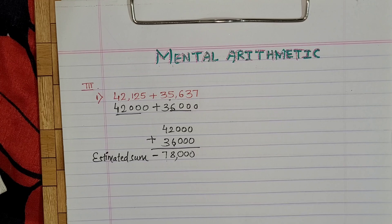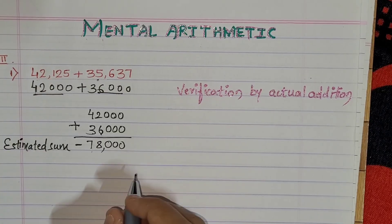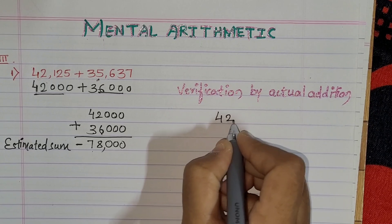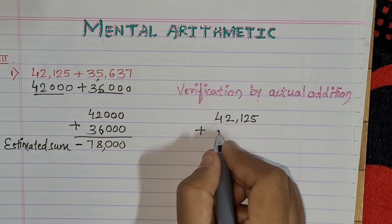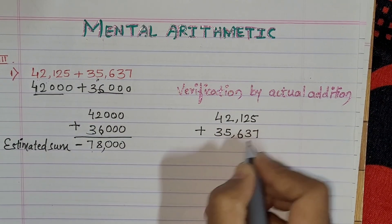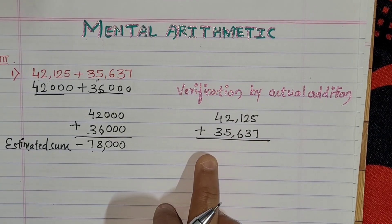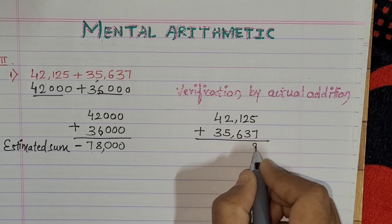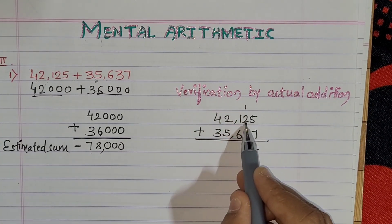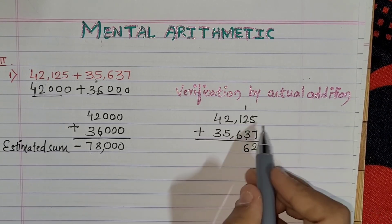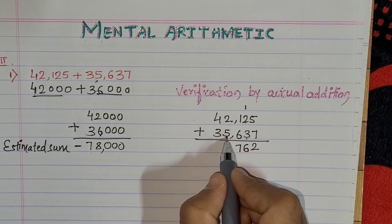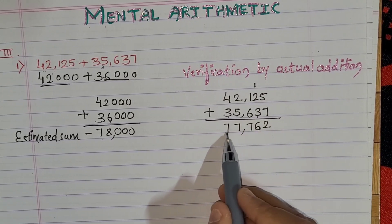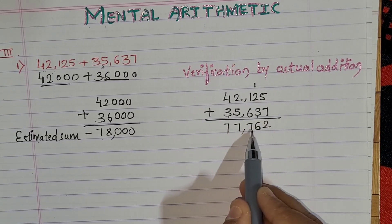We can verify it by actual addition. So we take the actual numbers: 42,125 plus 35,637. Let's add: 5 plus 7 is 12, write 2 and carry 1. Then 1 plus 2 is 3, and 3 plus 3 is 6. Next, 1 plus 6 is 7. Then 2 plus 5 is 7. And 4 plus 3 is 7. So the actual sum is 77,762.